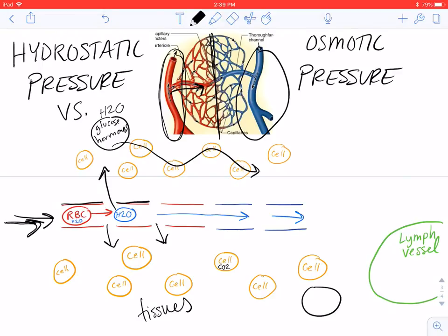When it gets to the middle here, right about there, the hydrostatic pressure drops. It gets really low because that pumping from the heart is kind of far away now, and it's dying out like a wave at the ocean. Once it gets to the shore it gets really weak.